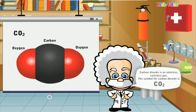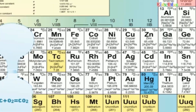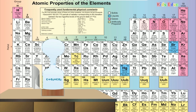The symbol for carbon dioxide is CO2. We know the chemical symbol for carbon dioxide is CO2 — that is, one carbon atom and two oxygen atoms.